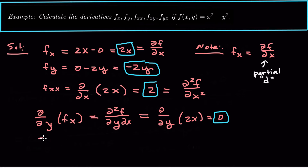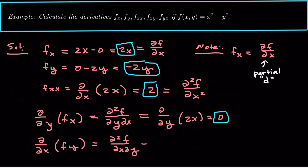For f sub yx, written as ∂²f/∂x∂y, we differentiate f sub y = −2y with respect to x. Since there's no x in −2y, that is also equal to zero. So both mixed partial derivatives f sub xy and f sub yx are zero in this case.